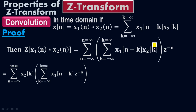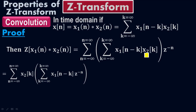Therefore, I can pick X2(K) and put it with the outer summation from N equals negative infinity to positive infinity. Then put Z to the negative N together with X1(N minus K). I will have: summation of X2(K) times the summation of X1(N minus K) times Z to the negative N.